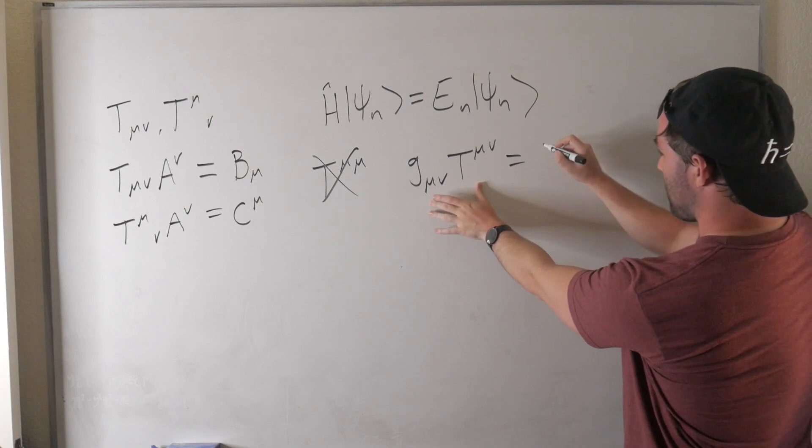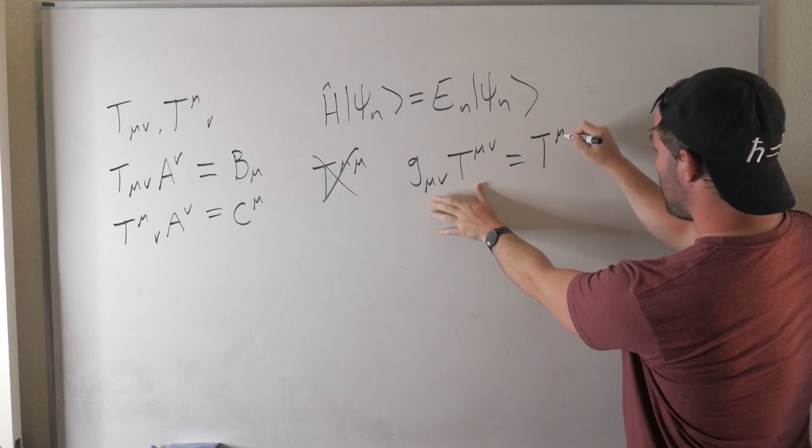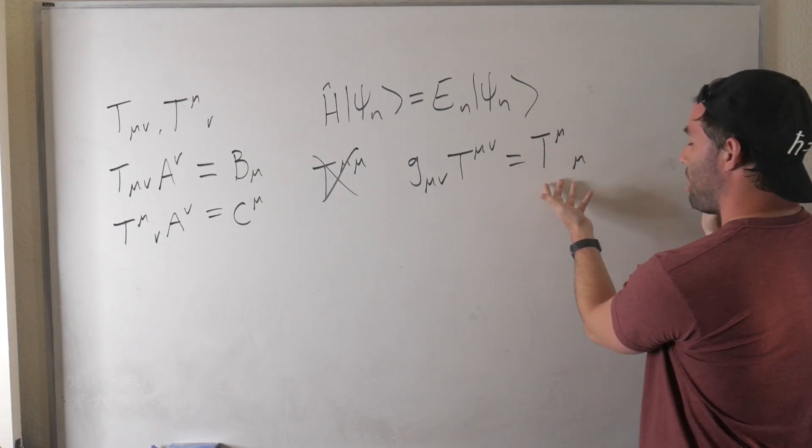So when we do this, this would be written as a T^μ_μ, and that's the familiar trace.